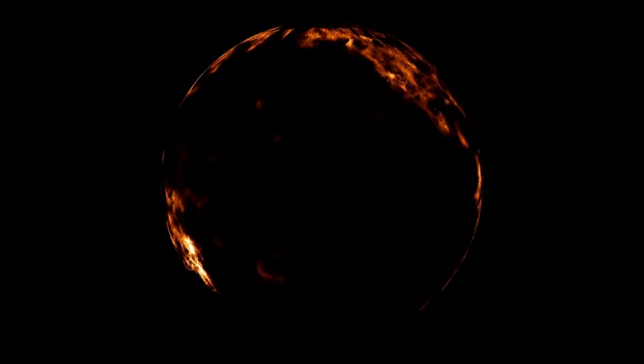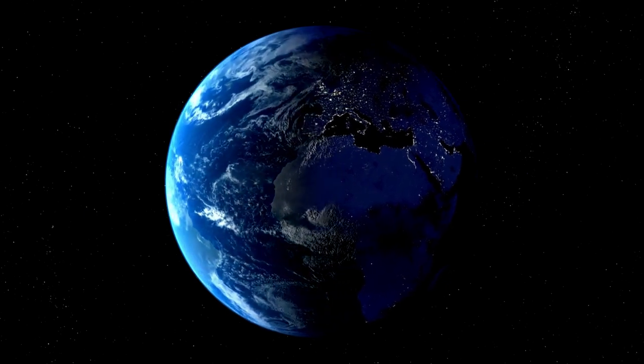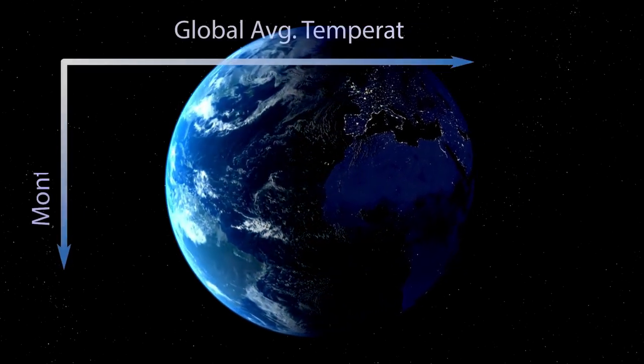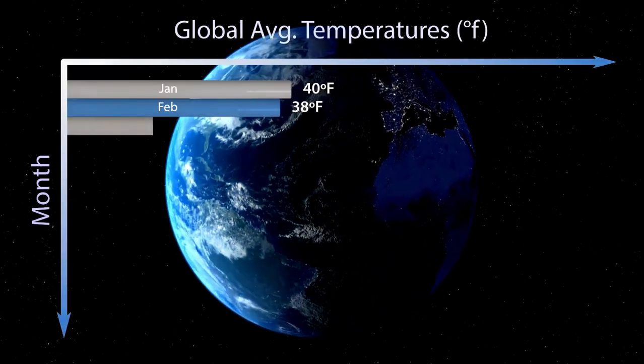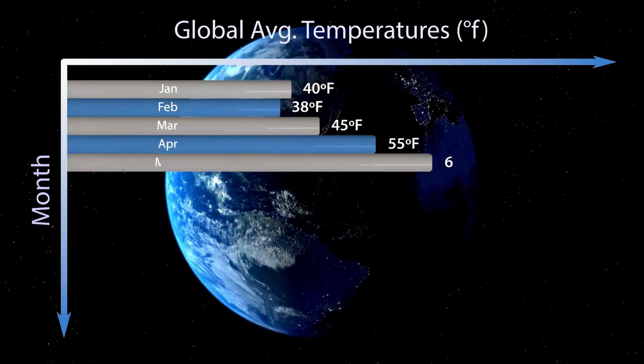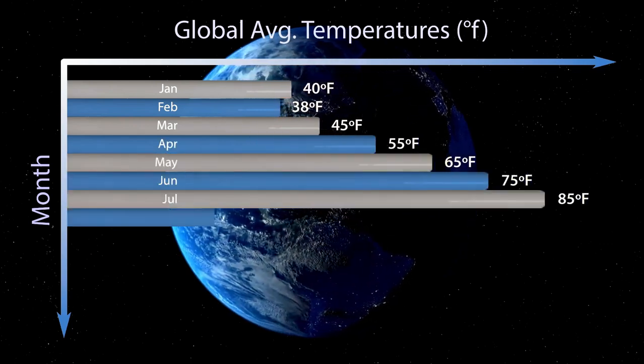The brightness of Betelgeuse reached an unprecedented low approximately a year after the cessation of the outflow. However, the star gradually regained its brightness over the following months, eventually returning to its normal magnitude.